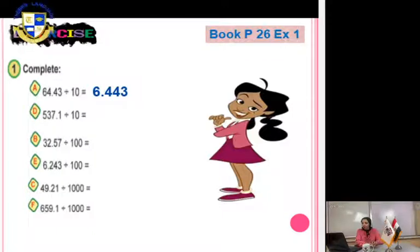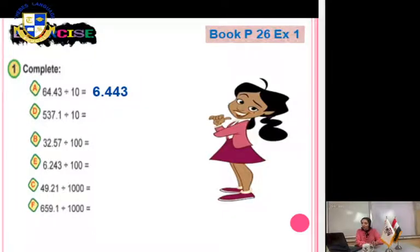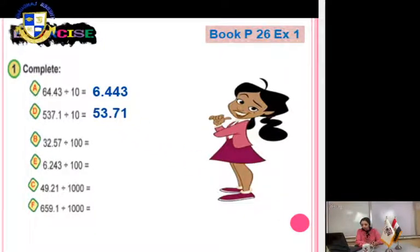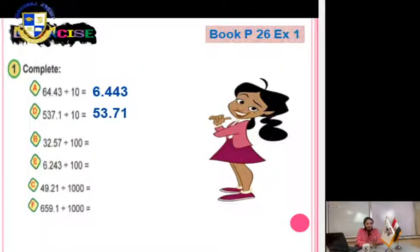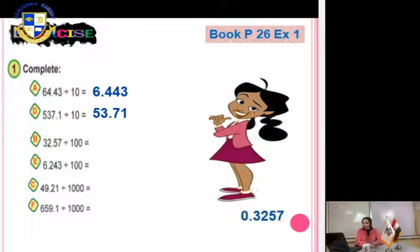537.1 divided by 10: move the decimal point 1 digit to the left. The answer is 53.71. Another: 32.57 divided by 100 — move the decimal point 2 places to the left. The answer is 0.3257.